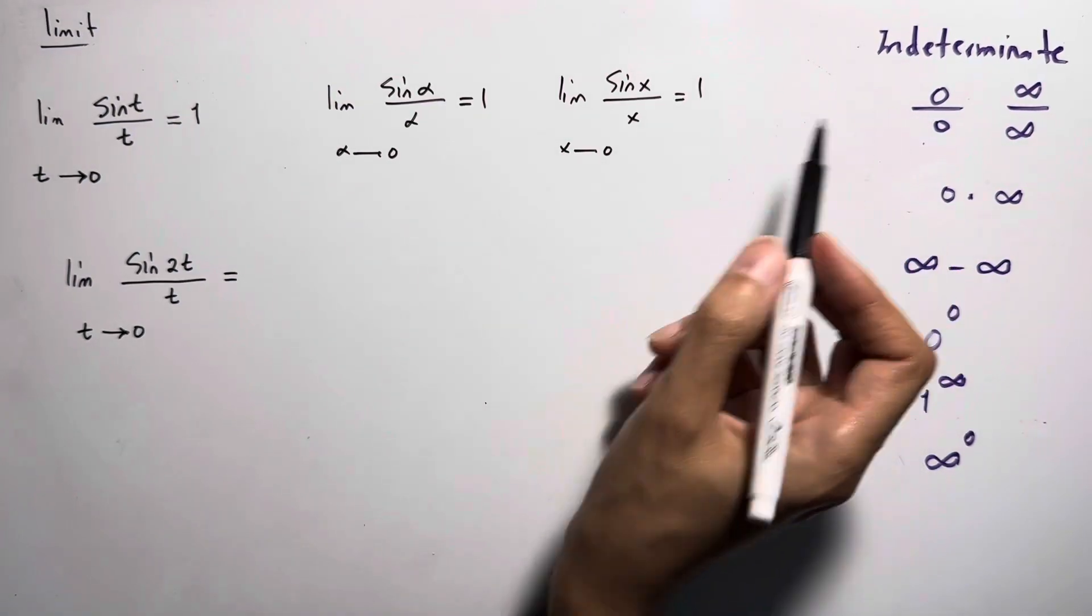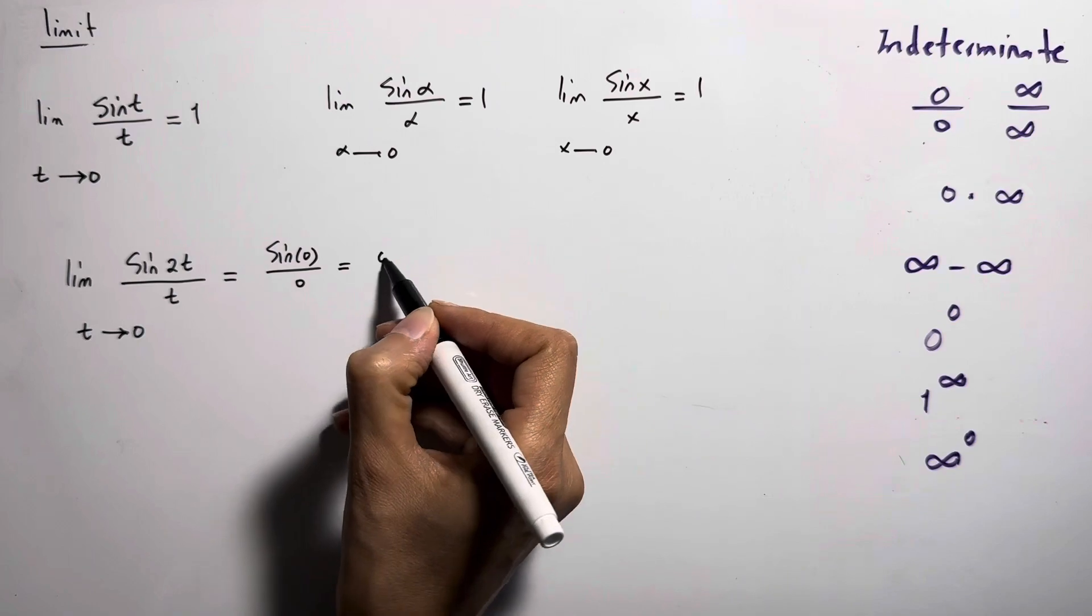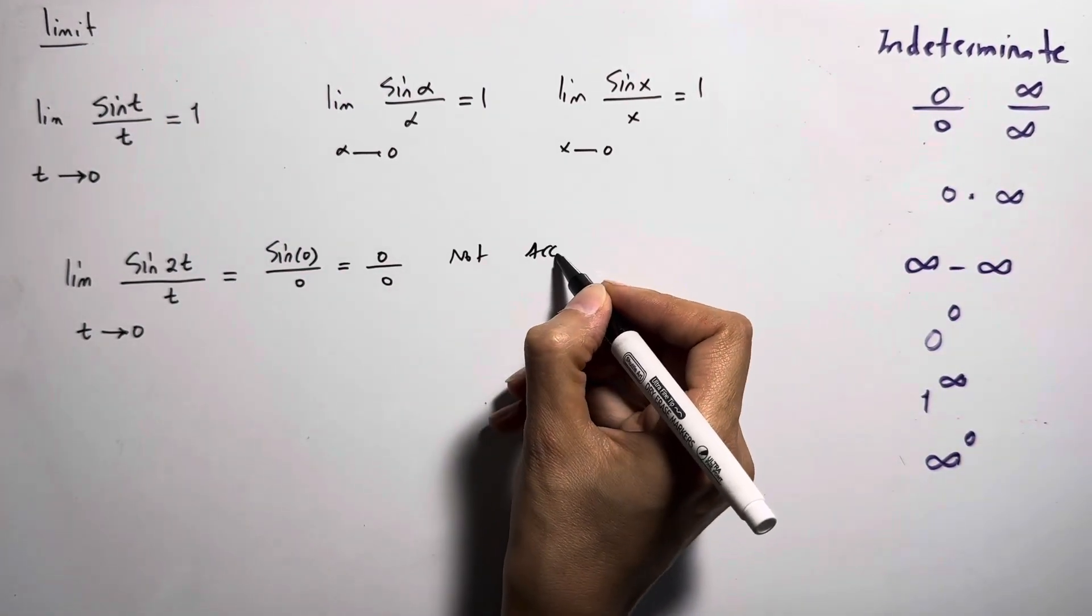If you do the direct substitution, you get sine 0 divided by 0, which is 0 over 0, an indeterminate form. Not acceptable.